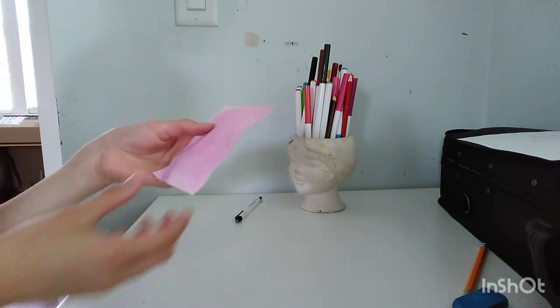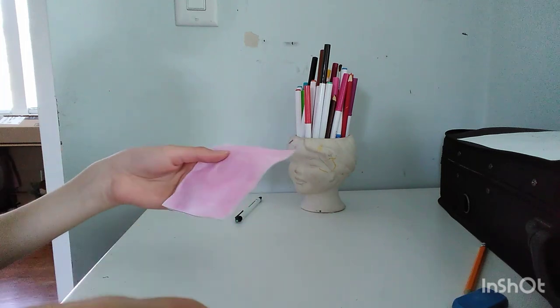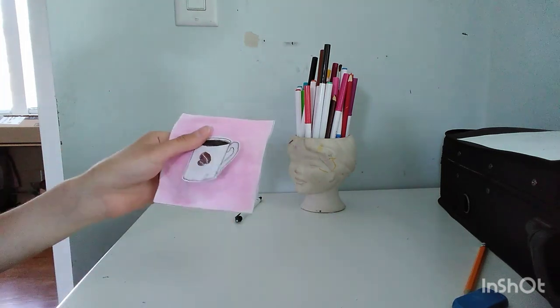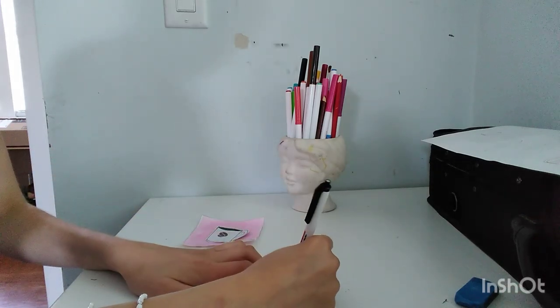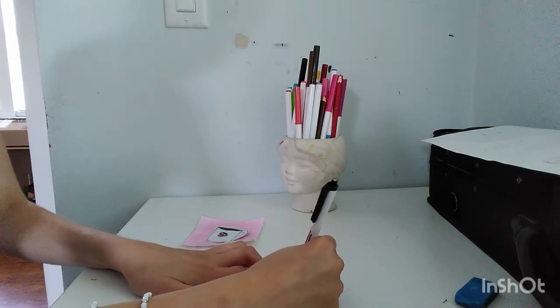By now you can cut out your pink poster and you're going to start collaging. Write the letters of your choice on a piece of paper and outline them with a pen.